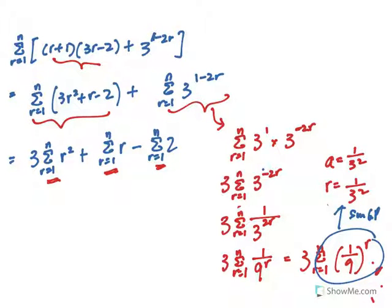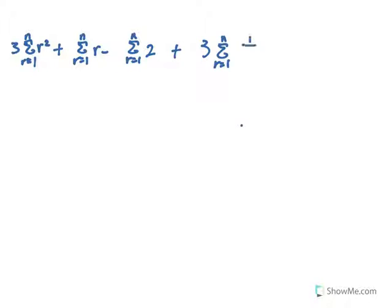So very quickly, let me rewrite everything neatly. So we just get our summation, r equals 1 to n, what we have just now, 3r² plus the summation of r minus summation from r equals 1 of 2 plus 3 times what we have explained just now, this is 1 over 9^r. We recall that this is a GP, where your first term is 1 over 9. Your common ratio is actually also 1 over 9.